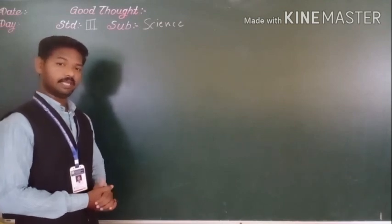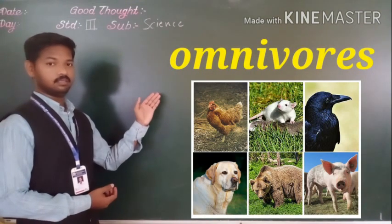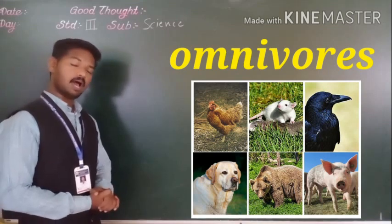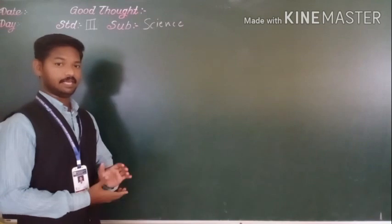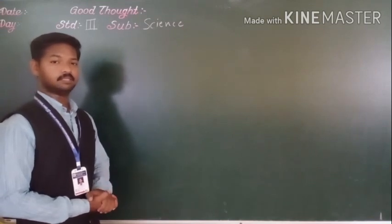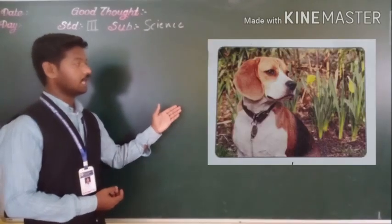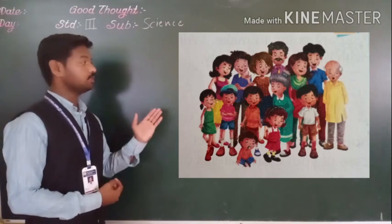Now next type of animals are omnivores animals. Omnivores are animals those who eat plant as well as flesh. Examples of omnivores animals are crow, dog and we also. We means human beings.